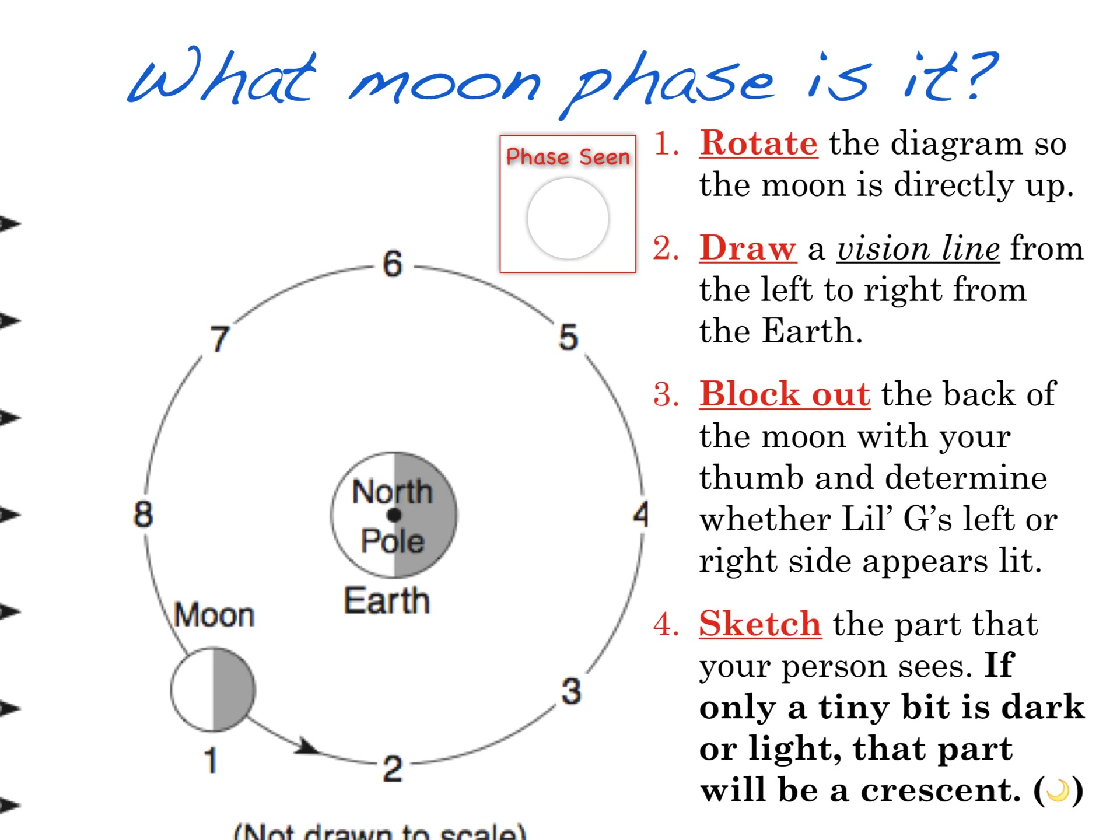All right, so the question is, how do we figure out what a person on Earth would see at this particular position of the moon? Now, this can be a little tricky, but if you follow these four steps here, you'll be all right 100% of the time.